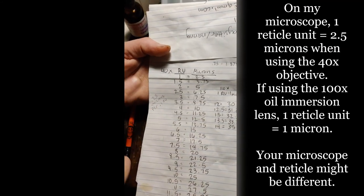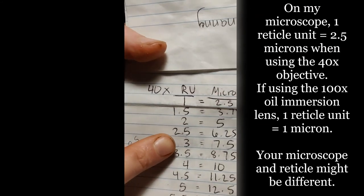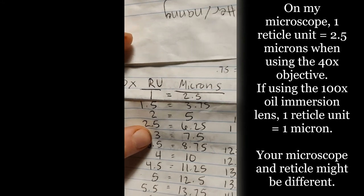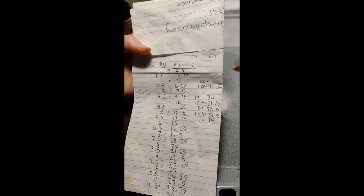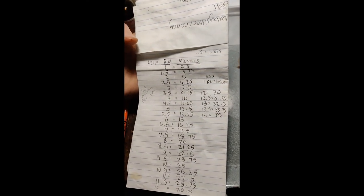So if I find something and the spore is three reticle units long, then it's actually 7.5 units in real life. So that is how you would measure the spores. Hopefully that's helpful to people.